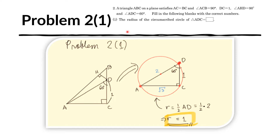Question 1: we need to find the radius of the circumscribed circle of triangle ADC. This is triangle ADC — we redraw it here. The circumscribed circle of a triangle is the circle where all three vertices of the triangle are contained. This is my attempt to draw the circumscribed circle; imagine that it passes through the vertex here.